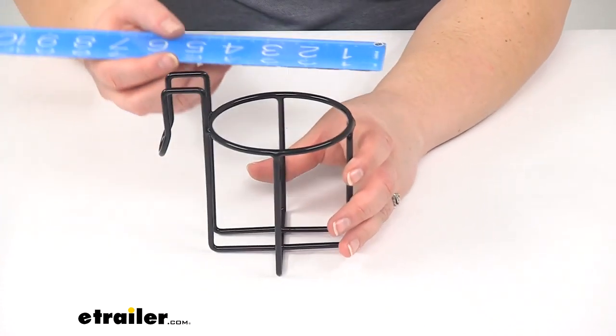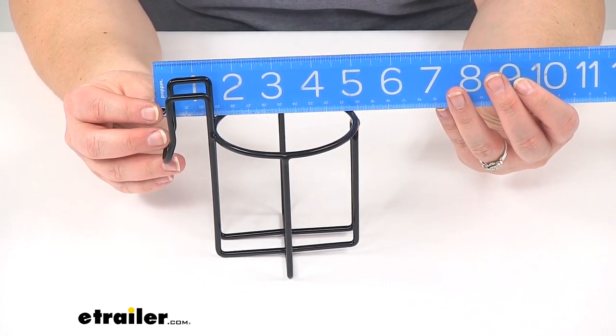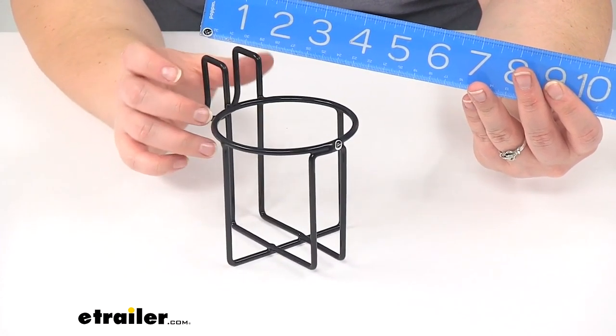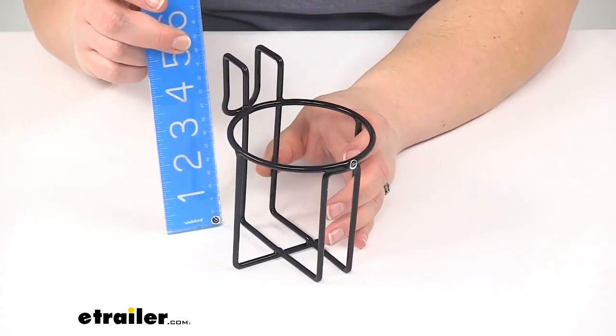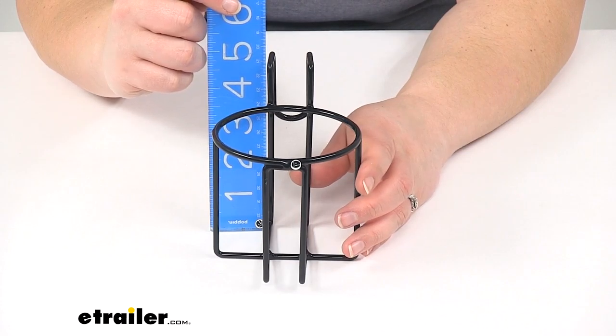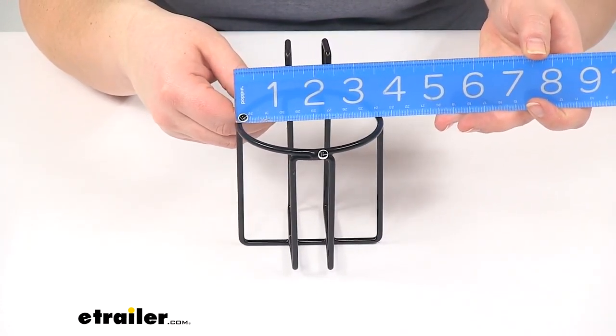As far as our overall dimensions from front to back, it's going to be about 4 and 3/4 of an inch, and then height wise, it'll be about 4 and 3/4, and then side to side, it's going to be about 3 and 3/4.